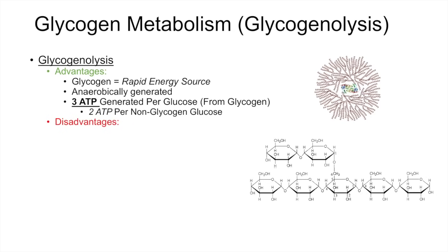Some of the disadvantages of glycogenolysis is that only a low amount of ATP can be generated per mass of glycogen. That's because glycogen, being a carbohydrate, absorbs a lot of water and has a lot of mass, as opposed to something like adipose tissue which is anhydrous. So we cannot generate a large amount of ATP for the size of glycogen. Another disadvantage is that it has a limited storage capacity, and it typically only lasts about 24 hours.